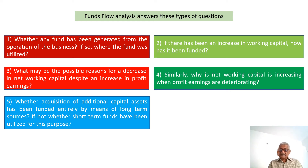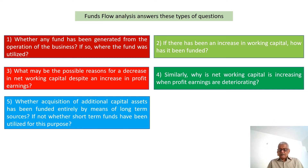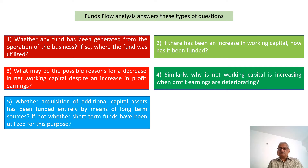Third: what may be the possible reasons for the decrease in net working capital despite an increase in profit? Suppose between two profit and loss statements you find there is an increase in profit, but at the same time the margin for working capital has declined. How has it happened — that is, net working capital, the margin for working capital, decreases when profit increases?